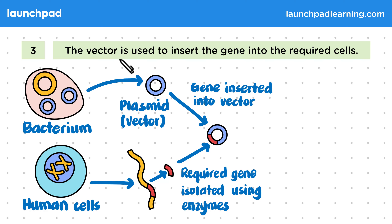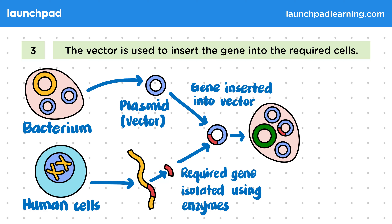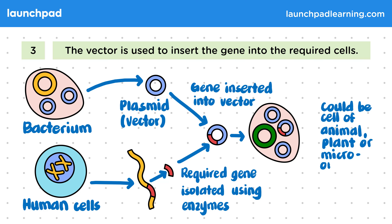Step three: the vector is used to insert the gene into required cells. So now we're going to insert our vector carrying the required gene in red into another bacterial cell. In general, this cell could also belong to an animal, a plant or a microorganism.